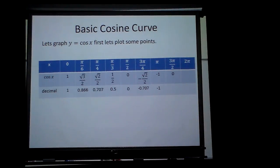At three π over two, cosine is zero. And at two π, it's back to one. It's going to start repeating then again at two π.